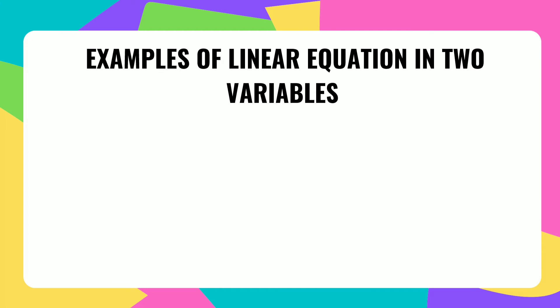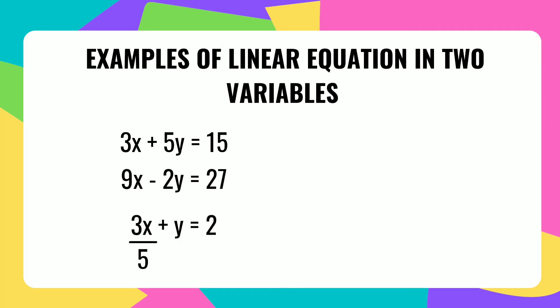These are examples of linear equations in two variables: 3x plus 5y equals 15, 9x minus 2y equals 27, 3x over 5 plus y equals 2, and y equals x plus 3.